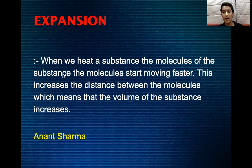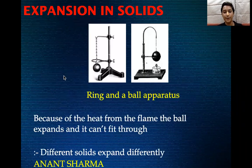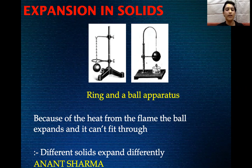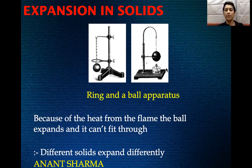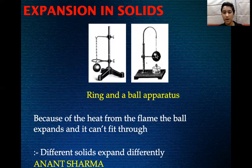Let's do an activity to show expansion in solids. For this you're going to need a ring and ball apparatus, which looks something like this and consists of an iron ball connected to an iron chain and a ring. At first you'll notice that the ball can pass easily through the ring because no heat has been provided. When we heat the ball up, it expands and its volume increases, making it unable to pass through the ring. When you cool the ball down again, it passes through the ring as it did earlier.